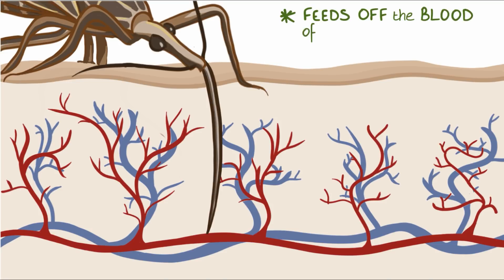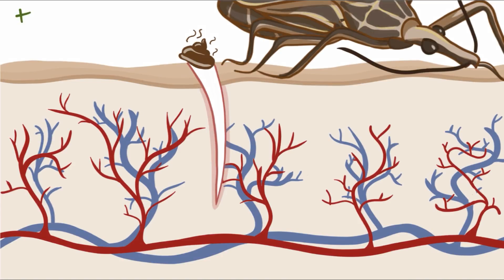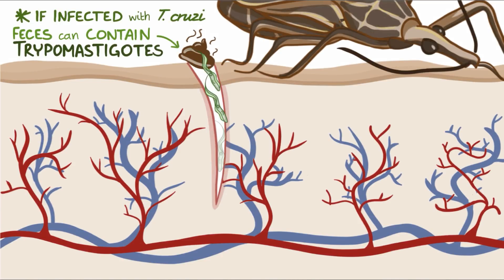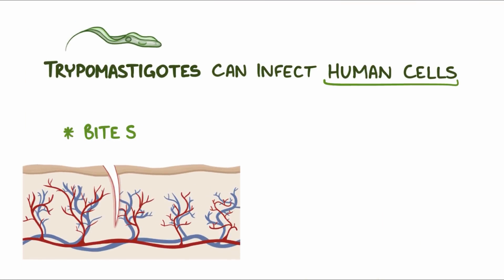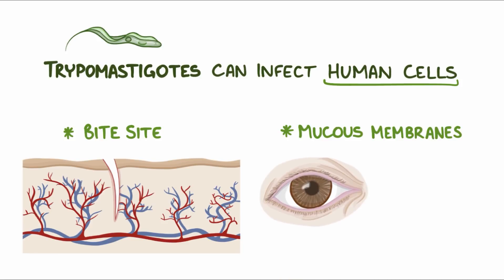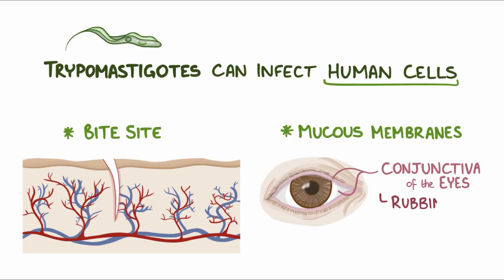Reduviid bugs feed off the blood of humans, and they prefer biting a person's face, which is why they're also called kissing bugs. The reduviid bug then defecates at the bite site, and if the reduviid bug is infected with T. cruzi, the feces can contain tripomastigotes. These tripomastigotes can then infect human skin cells at the bite location, or at mucous membranes, particularly the conjunctiva of the eyes — that can happen if a person unknowingly transfers the tripomastigotes by rubbing the bite site on their face and then touching their eyes.